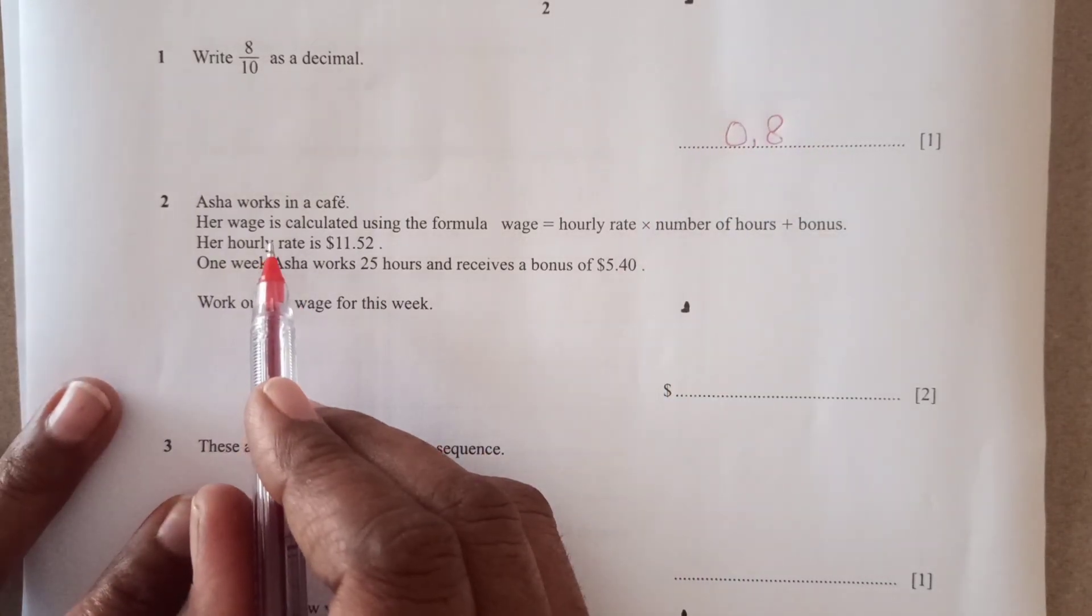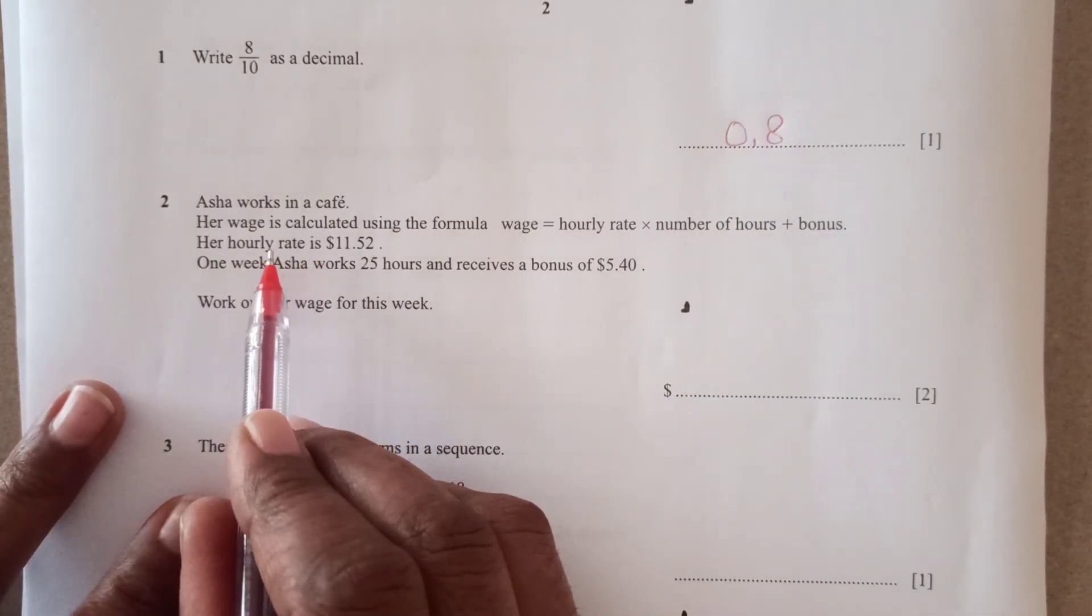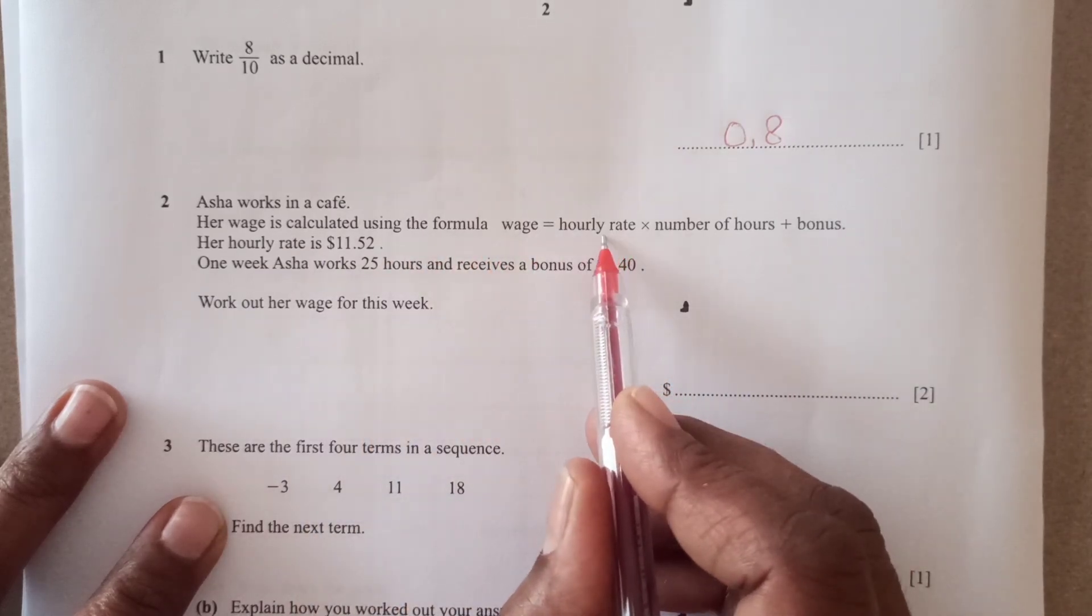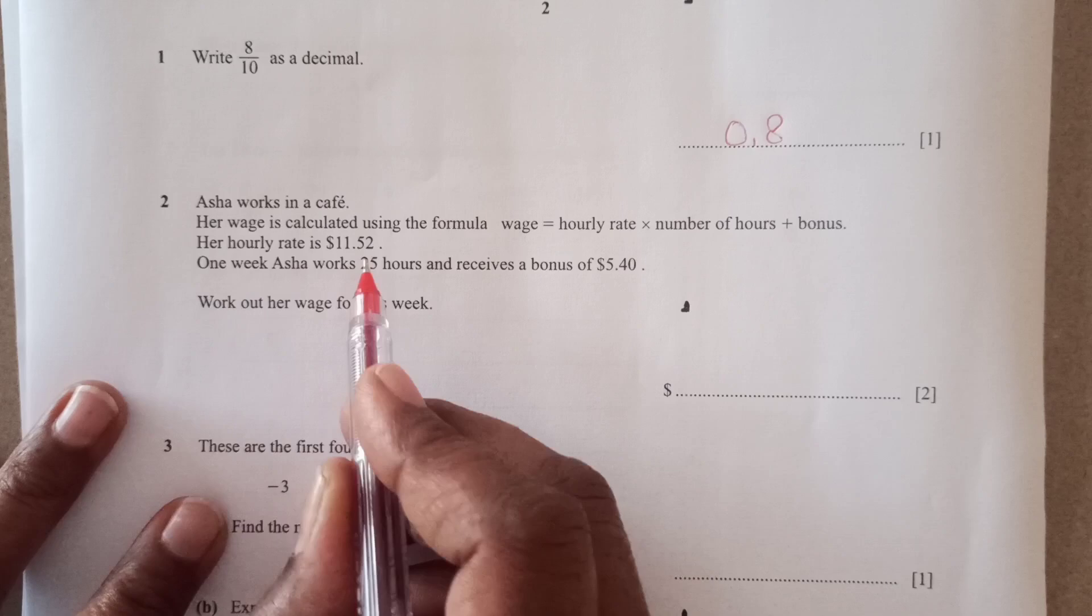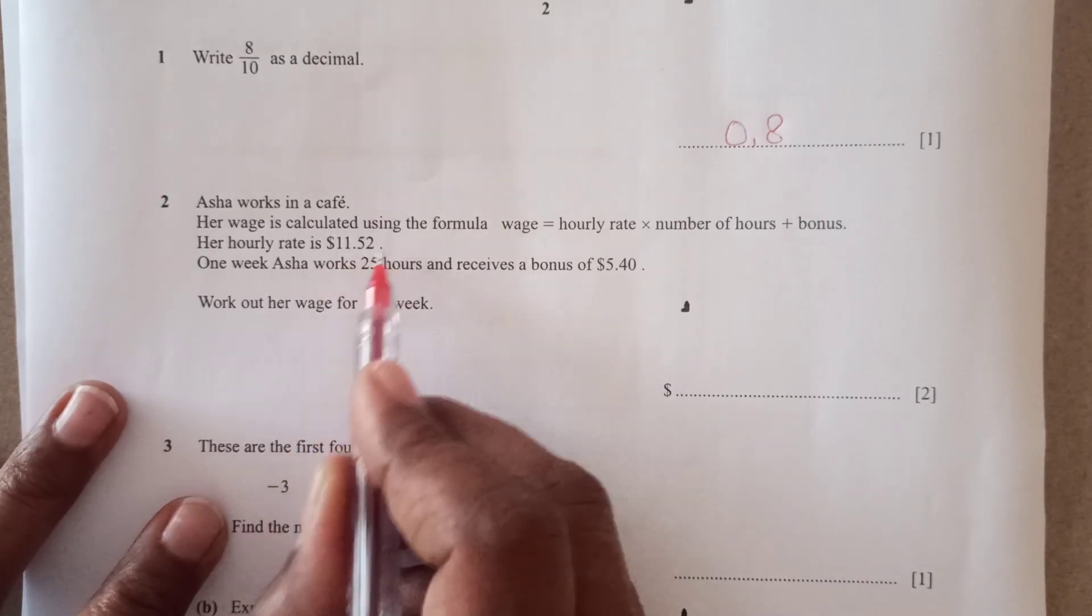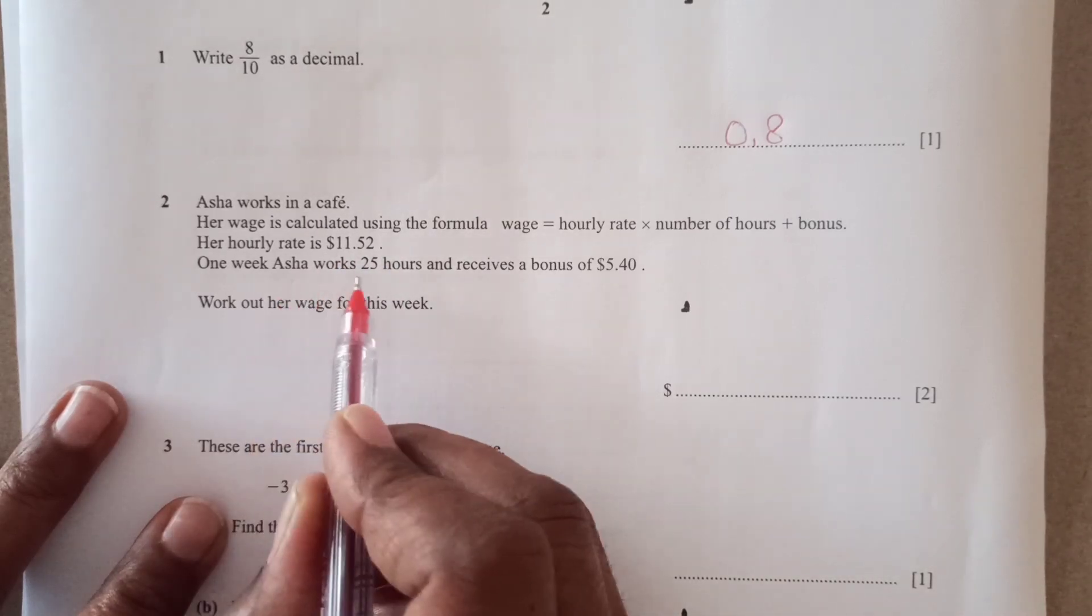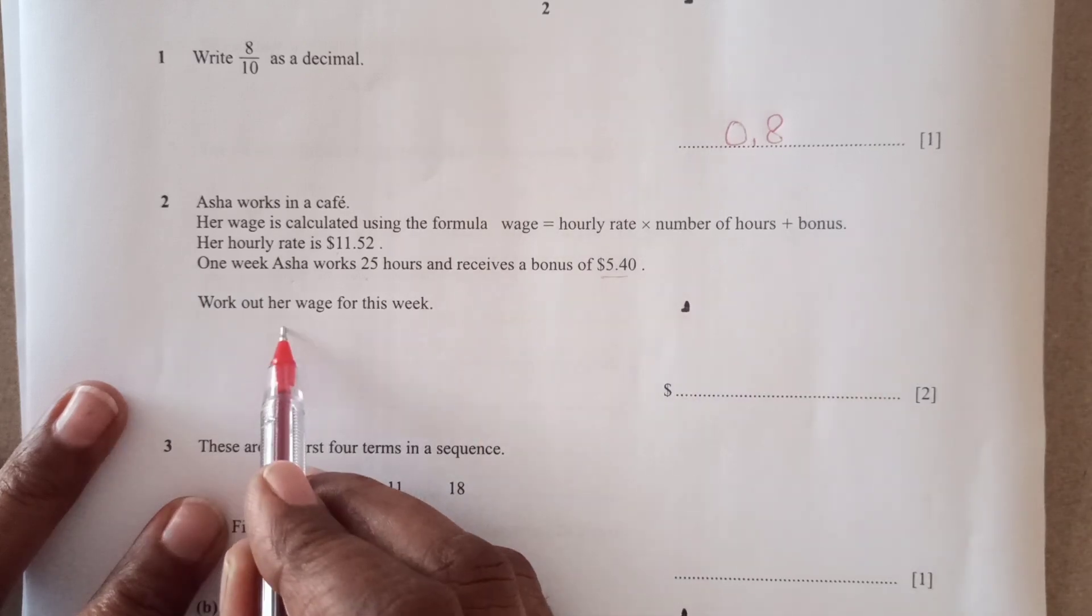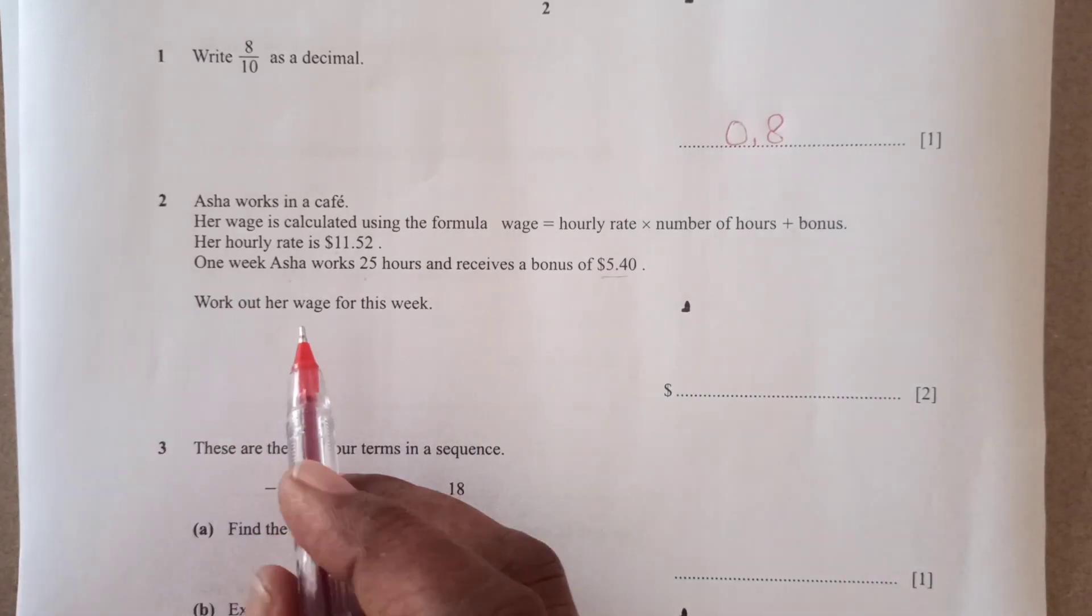Now Asha works in a cafe, her wage is calculated using the formula wage equals hourly rate times number of hours plus bonus. Her hourly rate is 11.52. One week Asha works 25 hours and receives bonus of this. Work out her wage for this week.